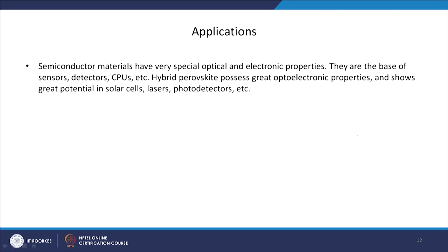In today's lecture, we will discuss the different applications of perovskite single crystal for solar cells, detectors, and lasers. Some applications: semiconducting materials have very special optical and electronic properties — they are the base of sensor detectors, CPUs, etc. Hybrid perovskite possesses great optoelectronic properties and shows great potential in solar cells, lasers, and photodetectors. Perovskite single crystal has been used to make light emitting diodes, photodetectors, and different IC circuits.